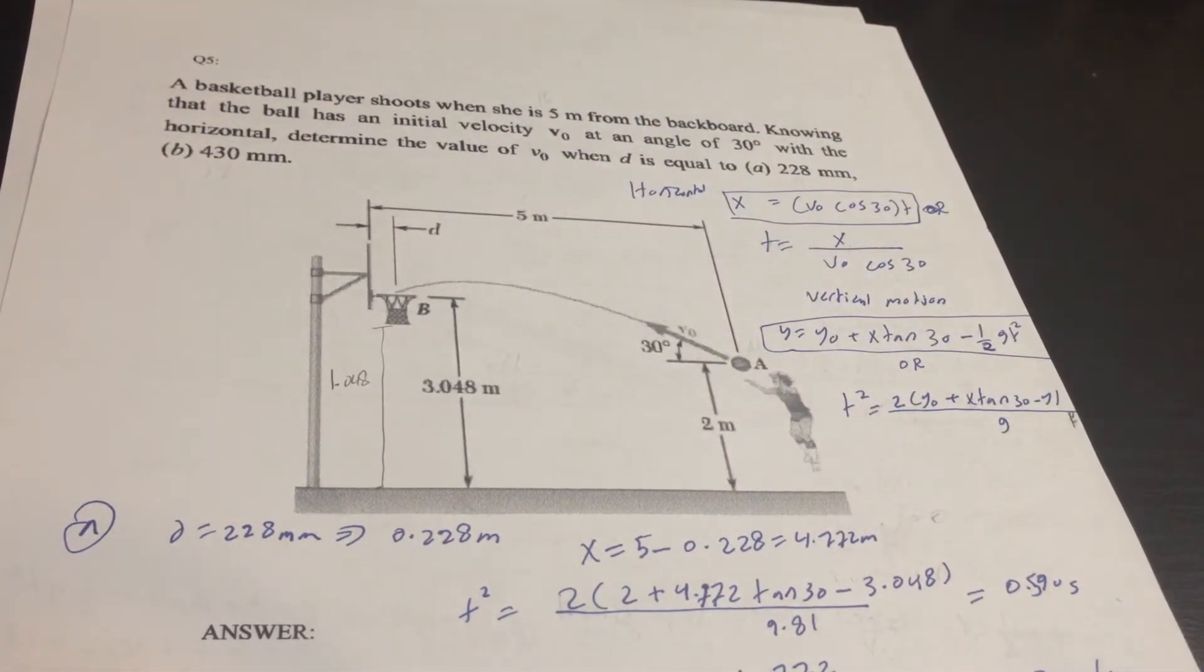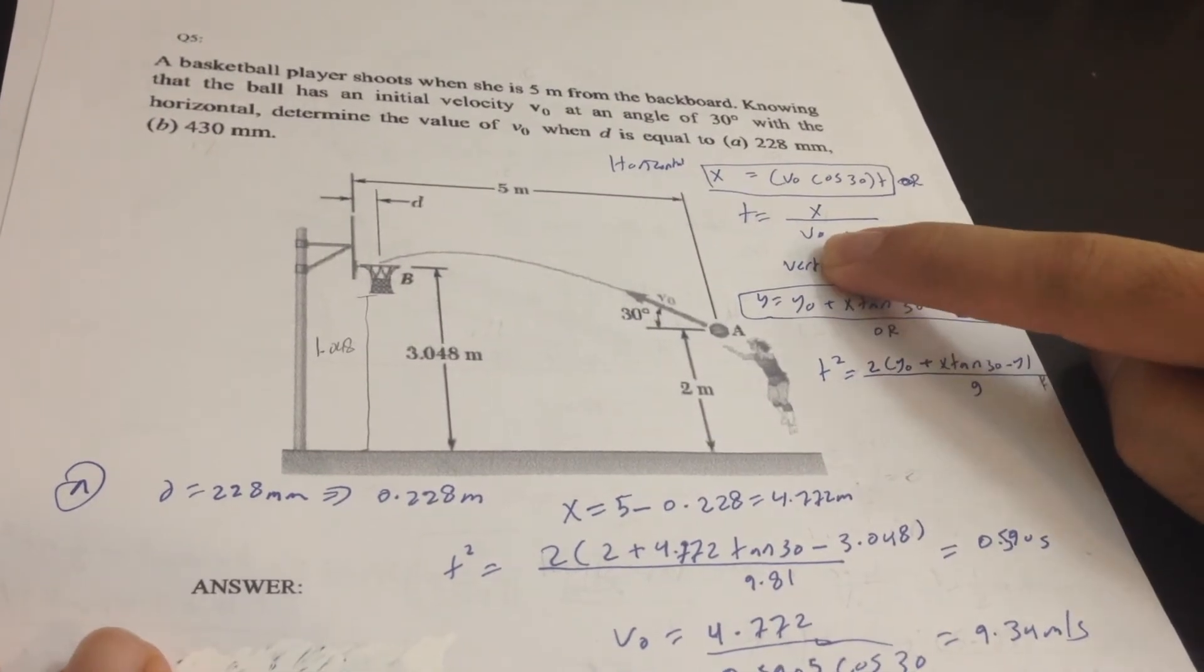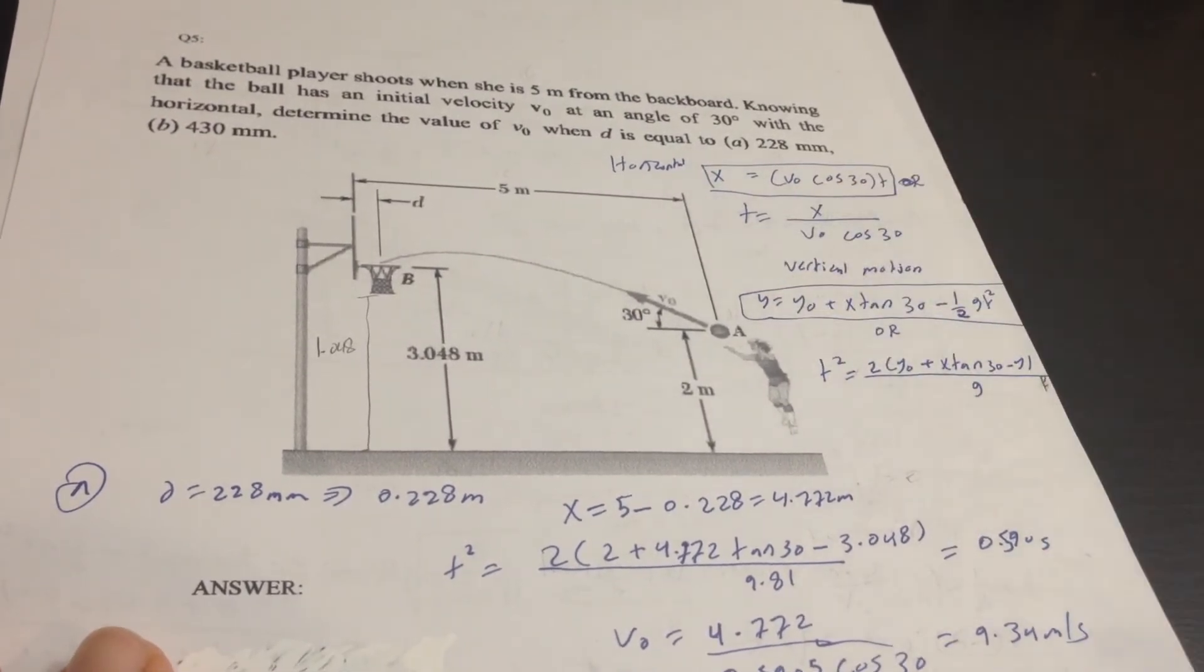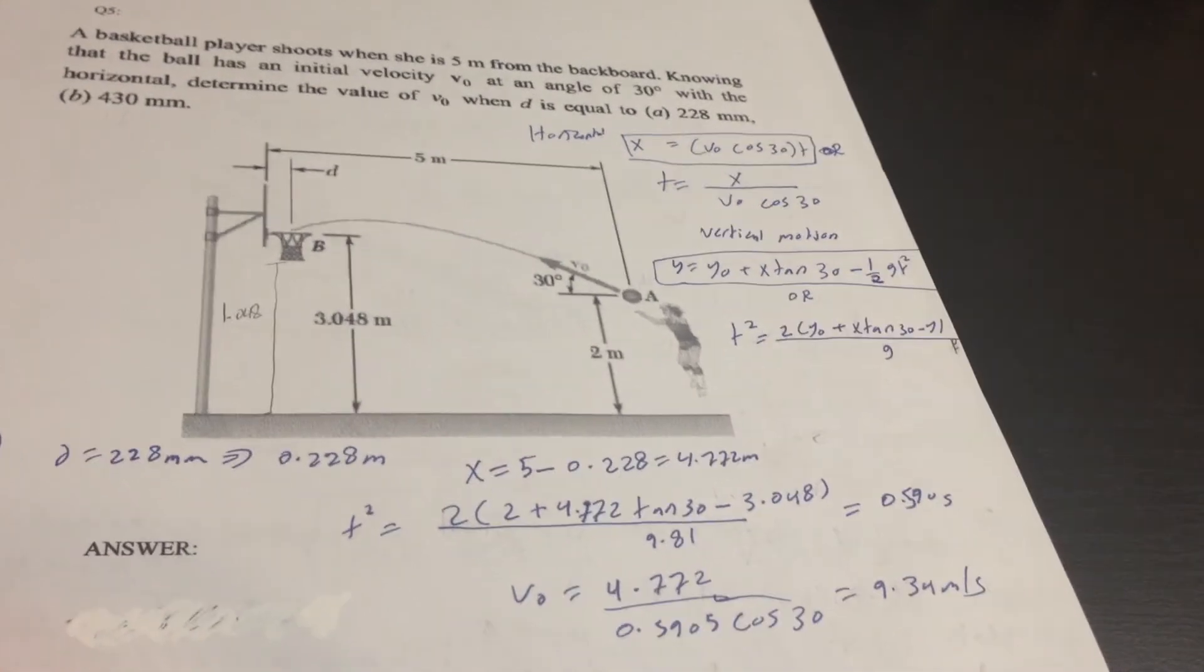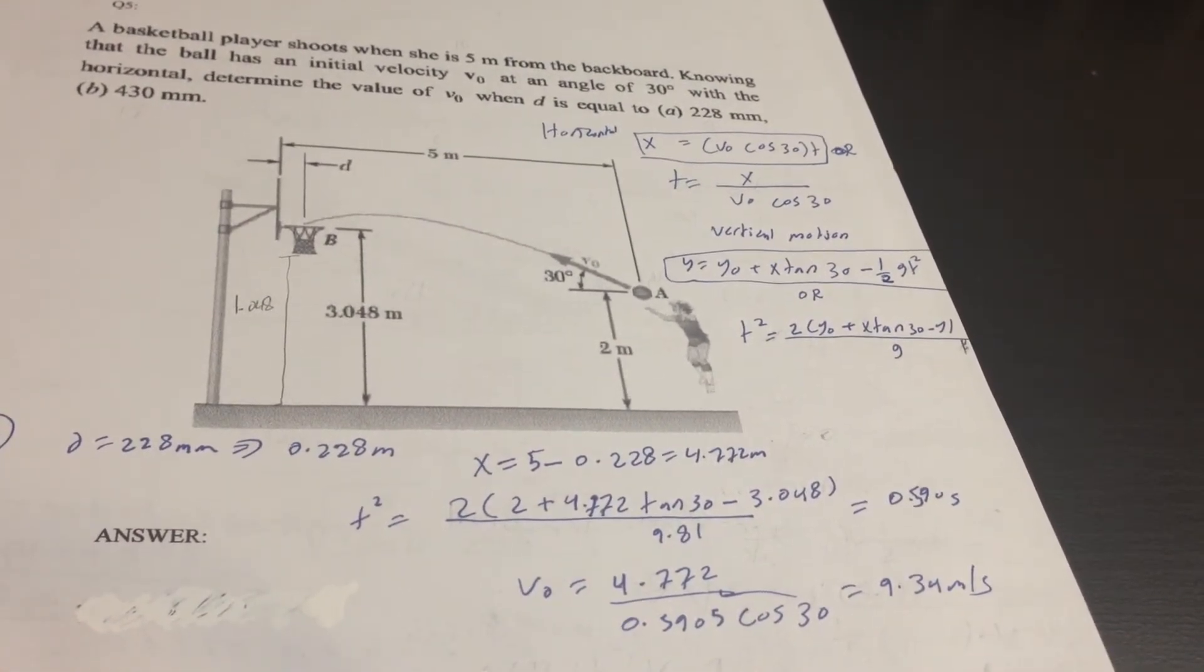So we have to use this equation with the unknown V0, and we know T and X. Just plug everything, and we have the answer, which is 9.34 meters per second.